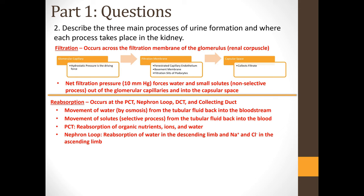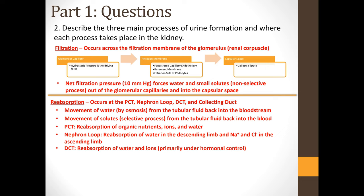In the nephron loop, there is reabsorption of water in the descending limb and reabsorption of sodium and chloride in the ascending limb. In the DCT, you have reabsorption of water and ions, primarily under hormonal control — like aldosterone, ADH, and parathyroid hormone. In the collecting duct, you also have reabsorption of water and ions, again primarily under hormonal control.